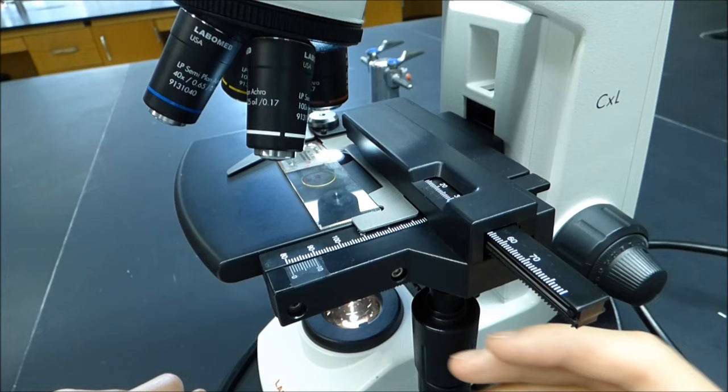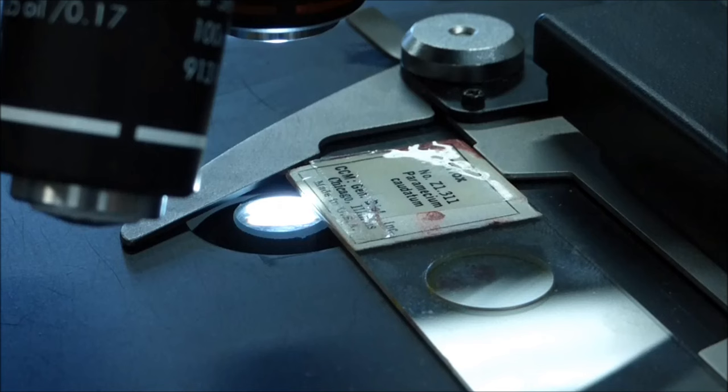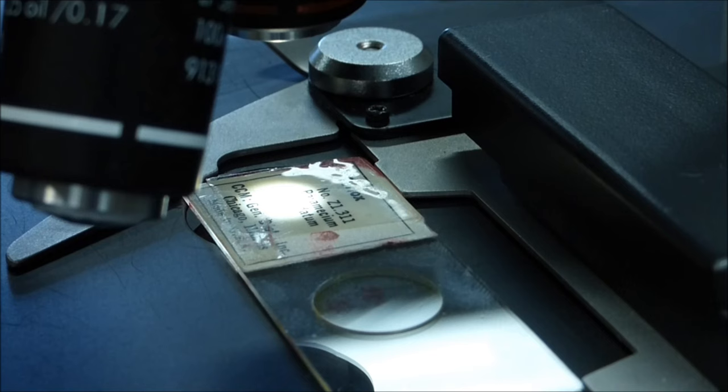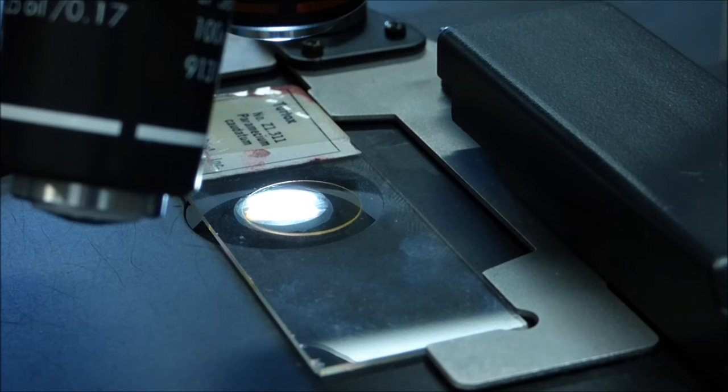Now begin by moving the mechanical stage knobs to ensure that the location of the specimens is right above the hole on the platform stage. You should watch from the side as you initially adjust the stage to ensure this happens. Keep in mind that the specimens are only going to be found on the region under the cover slip.